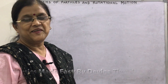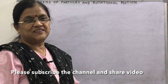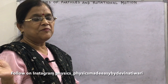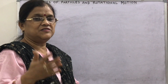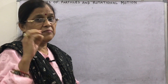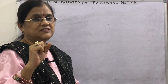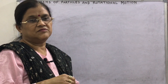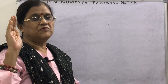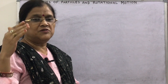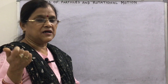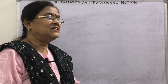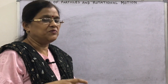Welcome to my channel Physics Made Easy. We are discussing rotational motion and system of particles, comparing linear motion and rotational motion through analogies. We have discussed several analogies but the main important one left is: what is analogous to mass in rotational motion? We have discussed velocity, angular velocity, force, torque, momentum, angular momentum — but not mass.